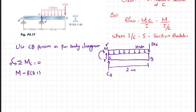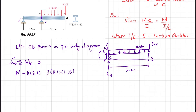Due to the distributed load of 3 kN/m, the total force is 3 multiplied by 2.1, acting at the midpoint of CB, which is at 1.05 meters from C. This also produces a clockwise moment, so it is also negative. The sum of all terms must equal zero.